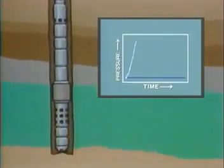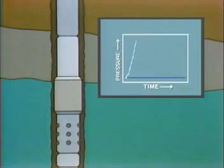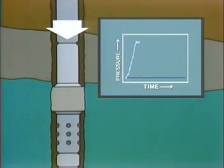When the tools reach the depth of the formation to be tested, the packer is set against the walls of the hole or casing, thereby isolating the pressure of the mud column from the pressure in the test zone.